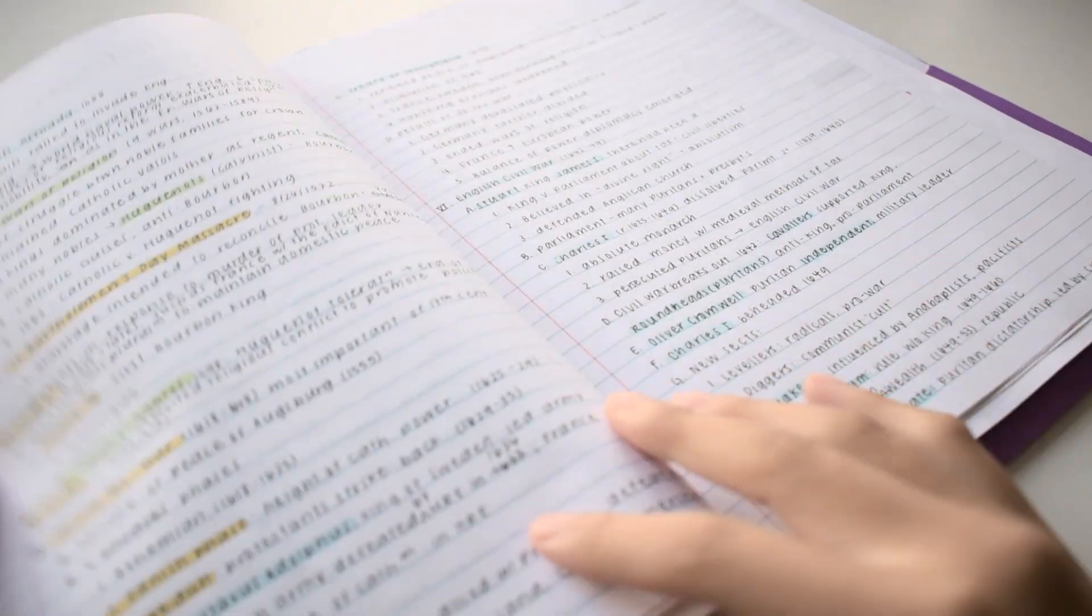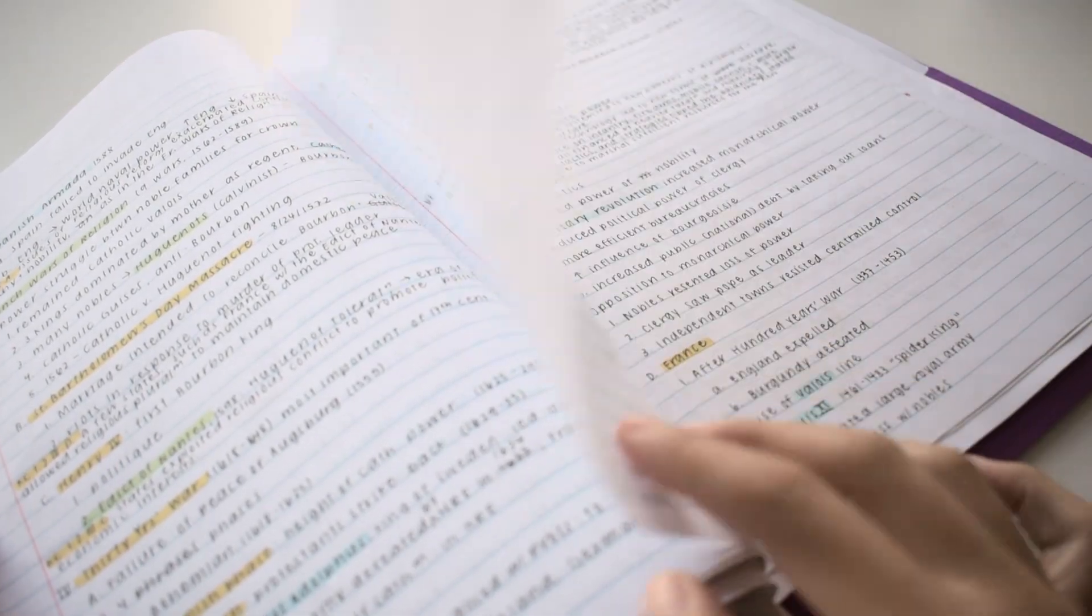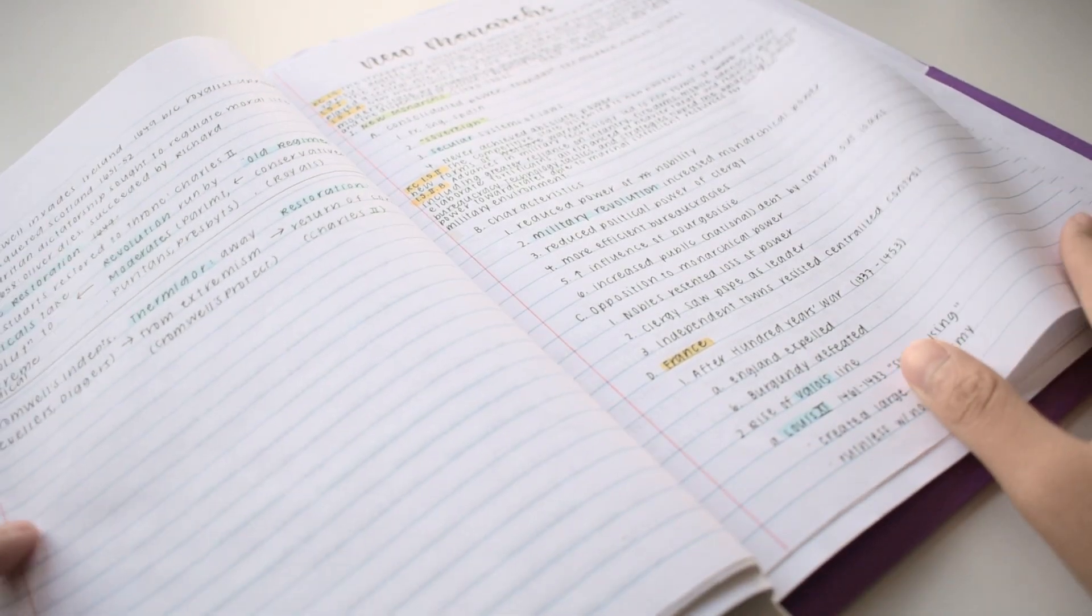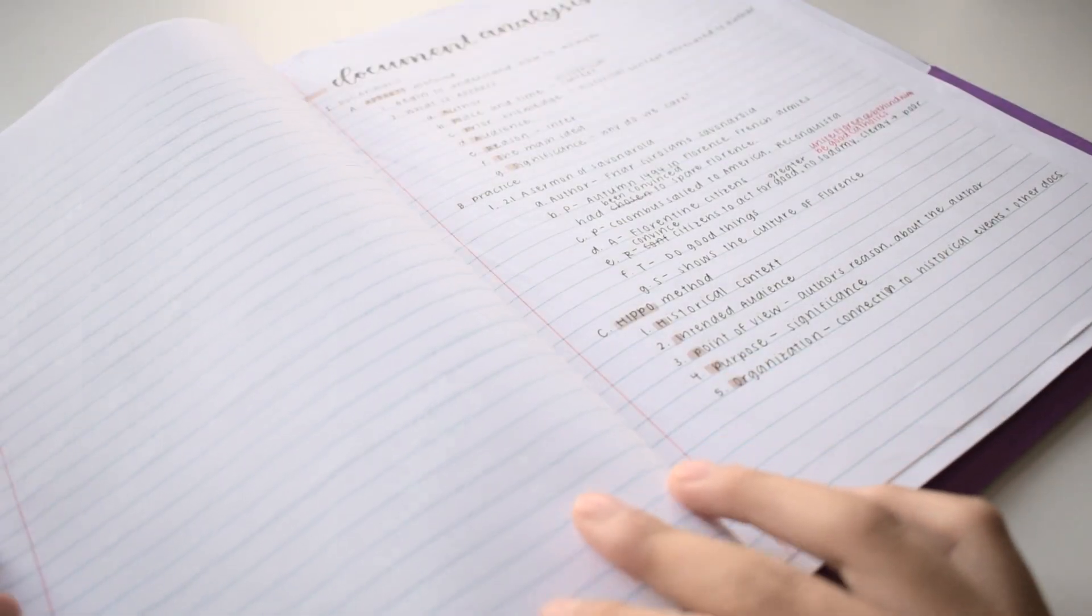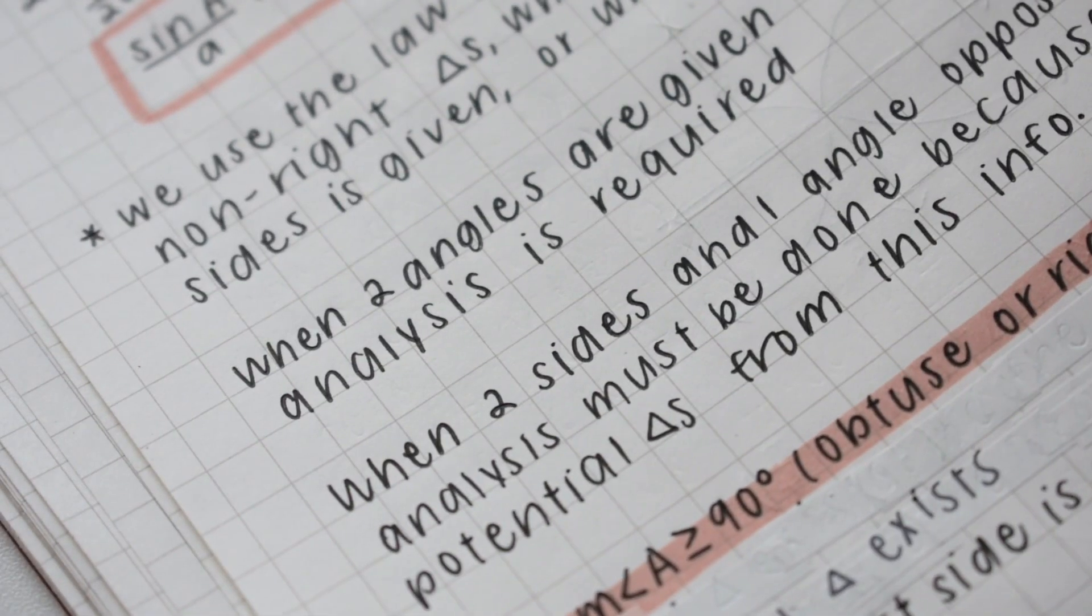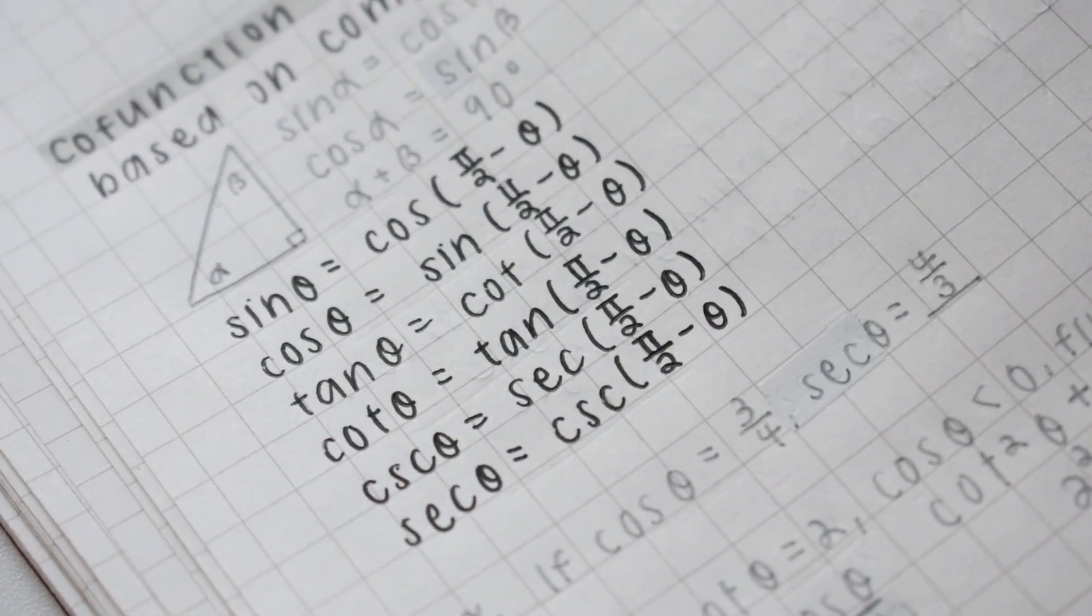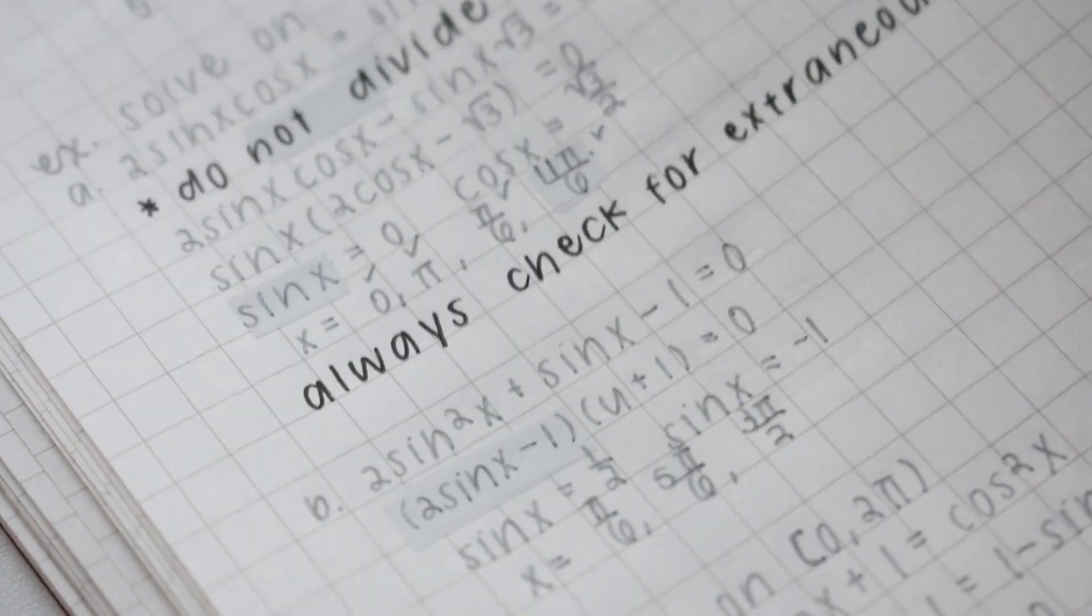Instead of writing down what your teacher says word for word, summarize the information and write only the key ideas. You'll have to write less, and this also helps you learn the information better because you're actually understanding it instead of just copying.